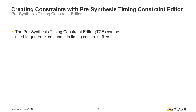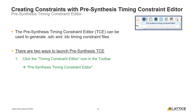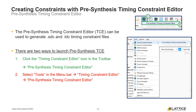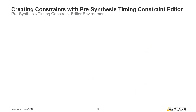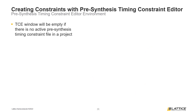One important thing to remember is that the timing constraint editor is not the only way pre-synthesis timing constraint files can be developed — they can also be created from scratch or imported. There are two ways to launch the pre-synthesis timing constraint editor. The first is to select the timing constraint editor's icon from Radiant's toolbar and from the drop-down list select Pre-Synthesis Timing Constraint Editor. The second way is by selecting Tools from Radiant's menu bar, then Timing Constraint Editor, and finally Pre-Synthesis Timing Constraint Editor.